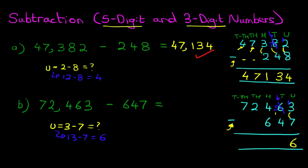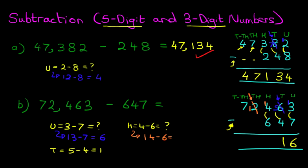Now we're going to do the tens. For the tens we've got five minus four. Five minus four is one. Now on to the hundreds. For the hundreds we have four minus six. Now four minus six we cannot do because four is smaller than six. So we're going to take one from the column on the left — that's the thousands. Let's cross out two — two minus one is one — and the one we have taken we're going to move across to the hundreds. So the hundreds column has now become fourteen minus six. Fourteen minus six is eight.